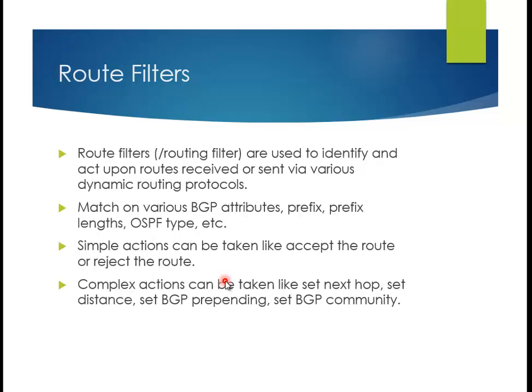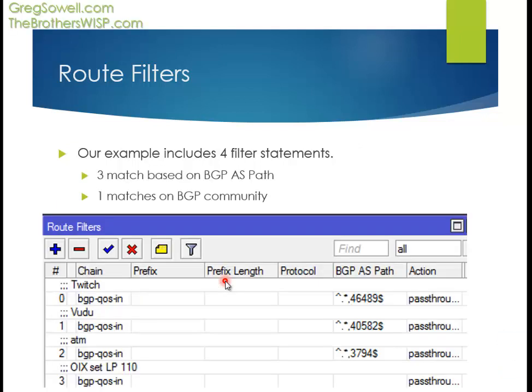Route filters are in routing filters. You can match a lot of different various BGP attributes - really, this applies to any dynamic routing protocol. You can match the prefix, the prefix length, OSPF type. There's a large number of things you can actually match. You can do simple actions like allow the route through or reject it, or do something more complex like change the next hop or set the administrative distance. You can also set BGP prepending, communities, and all kinds of interesting things. In this example, there are going to be four route filters, and three of them will use BGP AS path matching.